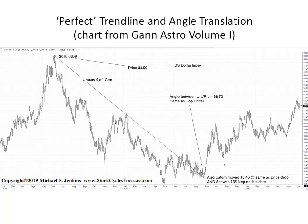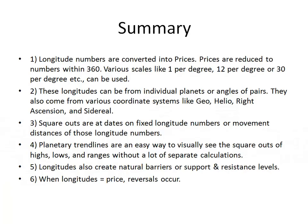To summarize: longitude numbers are converted into prices — people subconsciously feel the planets moving and convert that distance into prices. Prices are also reduced to numbers within 360: find a price of 1,000, subtract 360 twice, and get a leftover. We can use various scales like 1 degree per degree, 12 points per degree, 30 per degree, or some oddball number like 17 per degree if the low was $17. These longitudes can be from individual planets or angles of pairs of planets, and from various coordinate systems: geocentric degrees, heliocentric degrees, right ascension, or sidereal. Once you find out which is working, it will work forever on that commodity.